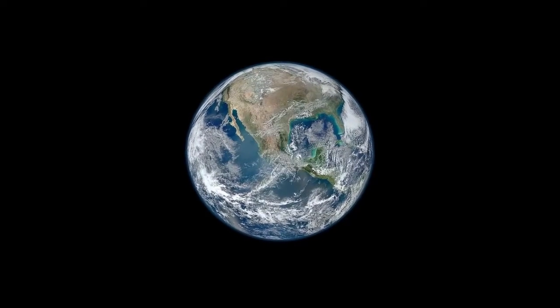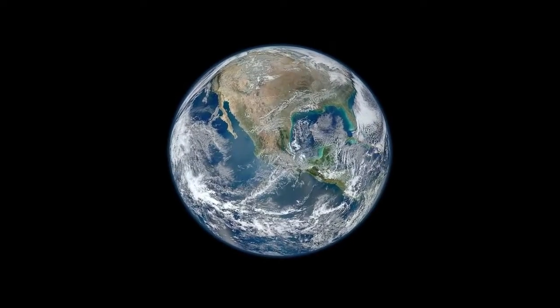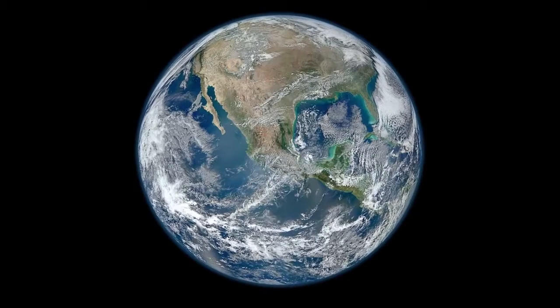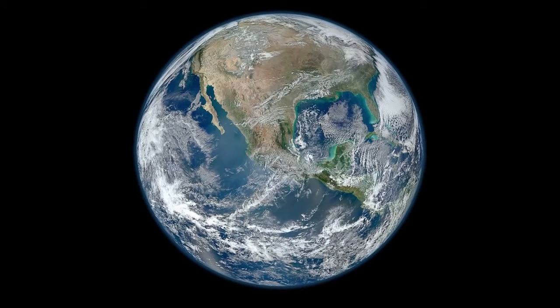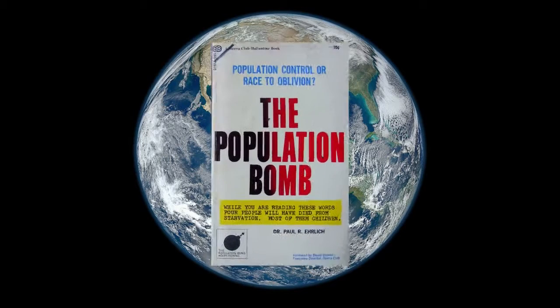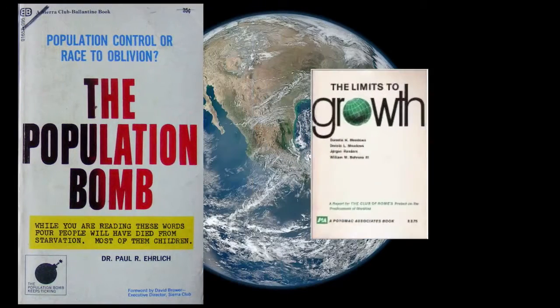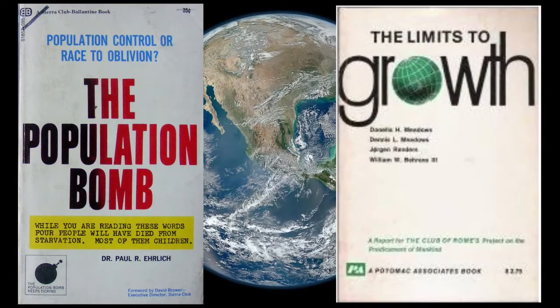Malthus's theory won supporters and has been used as an argument against efforts to better the condition of the poor. During the 20th century, environmentalists used Malthus's argument to stress that the earth cannot sustain too many people and that resources will run out unless population growth is brought under control. Famous examples are The Population Bomb written by Paul Ehrlich and the report for the Club of Rome, Limits to Growth.